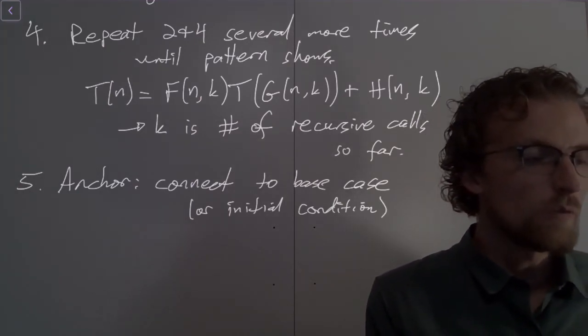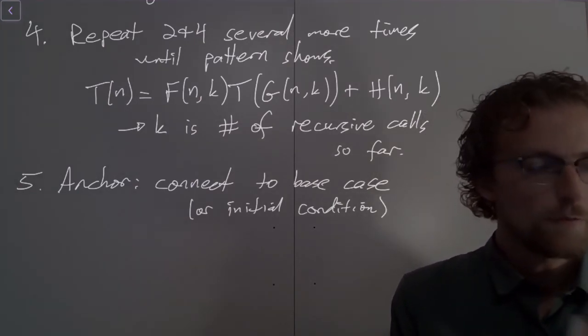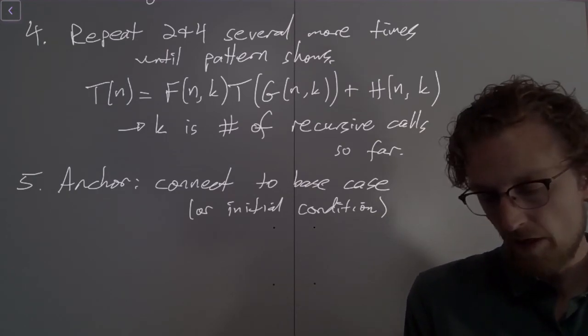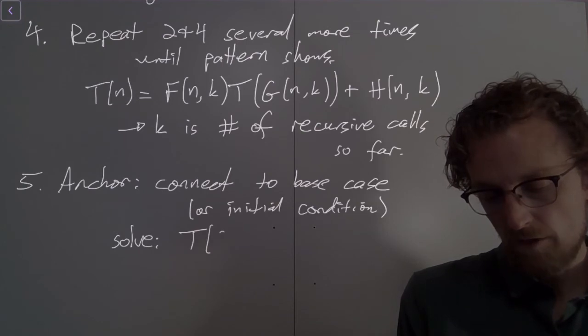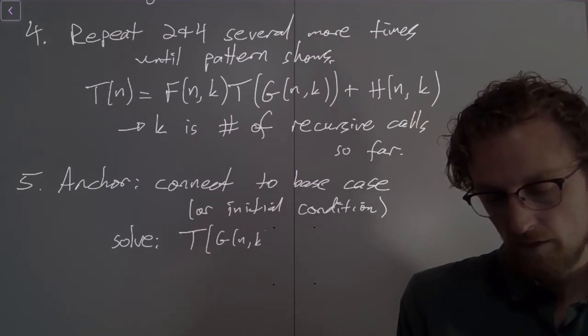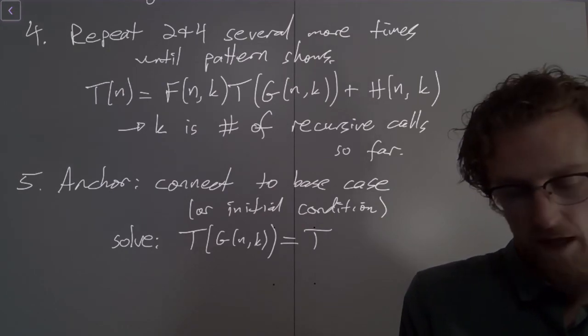Okay, so connect to the base case and literally what we're going to do is we're going to solve the following expression. Right, so solve this: T(g(n,k)) equals T(n0).